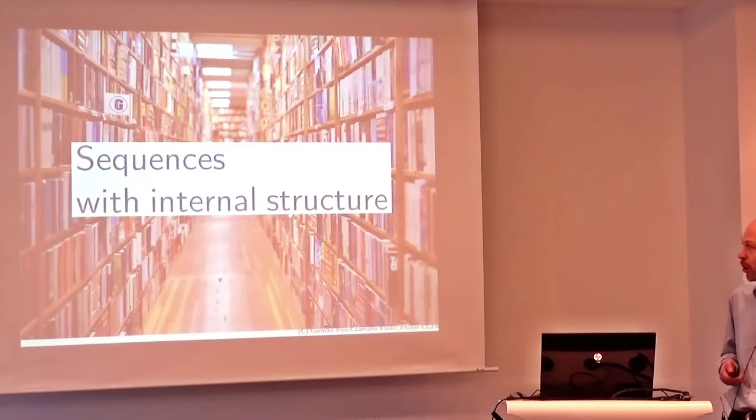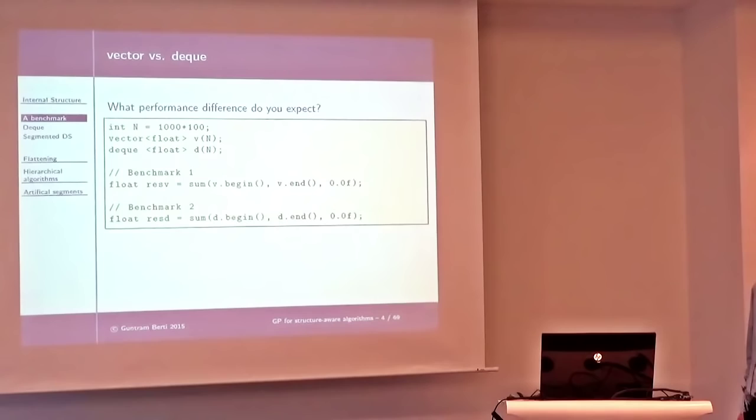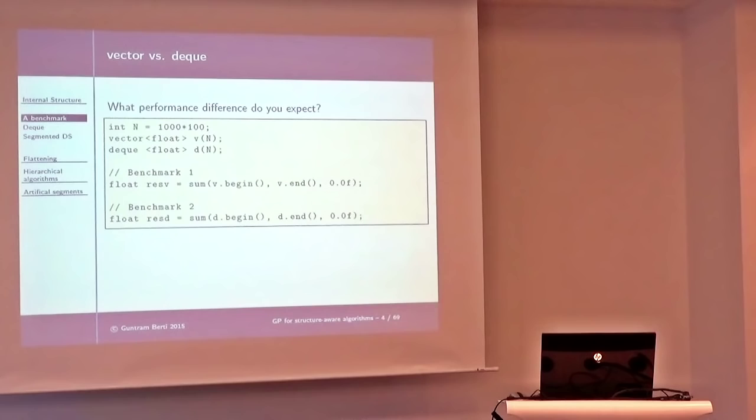I have set up a small benchmark. It's a vector of 100,000 floats and a deque of 100,000 floats, and I simply sum up all the floats over the vector and over the deque. What's the difference in performance you would expect?